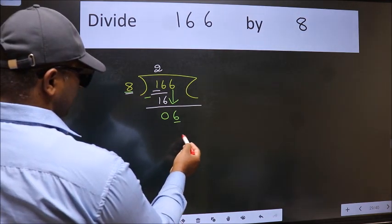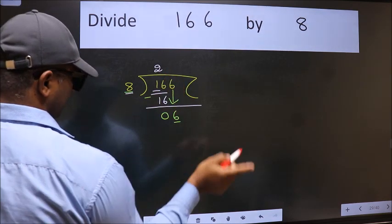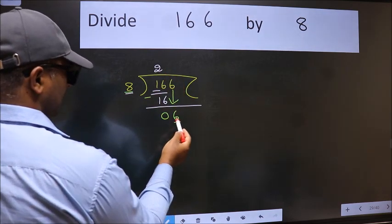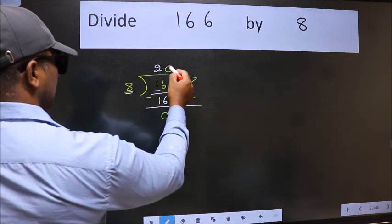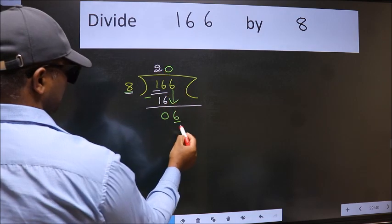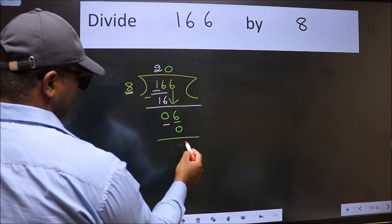which number should we take here? If I take 1, we will get 8. But 8 is larger than 6. So, we take 0. So 8 into 0, 0. Now we subtract. We get 6.